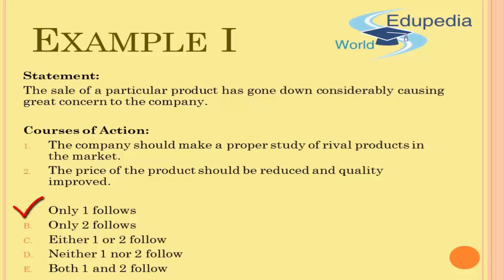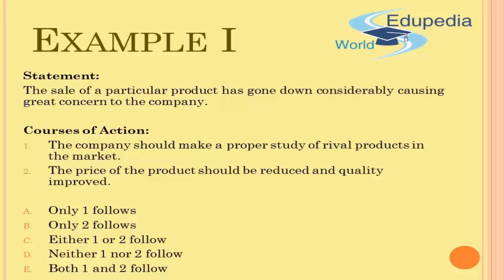It may be true that only the first course of action is valid, or only the second one. It is also possible that either one of them can be implemented but there is no need to implement both. Another possibility is that neither is a good solution, and finally, both of them could be good solutions that can be implemented at the same time.